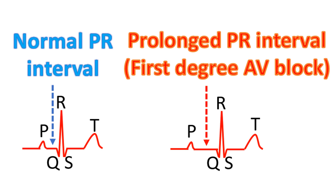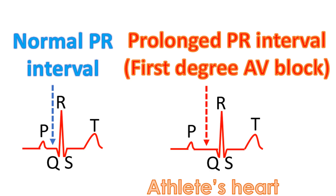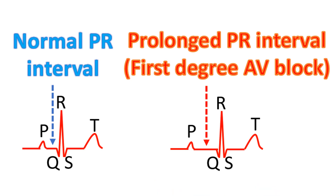First degree AV block can occur in healthy athletes due to the enhanced activity of the vagus nerve arising from the lower part of the brain, but this does not produce any functional abnormality. First degree AV block can sometimes be a manifestation of diseases like rheumatic fever, a disease which affects predominantly the joints and the walls of the heart.